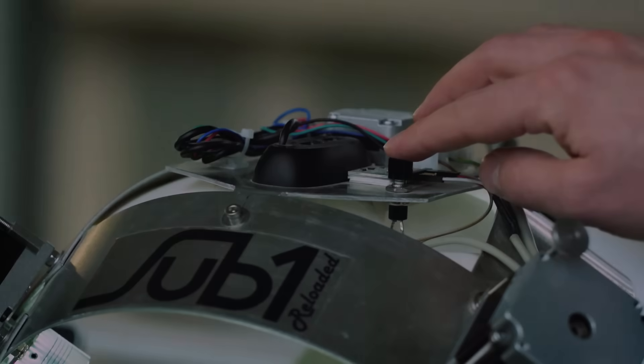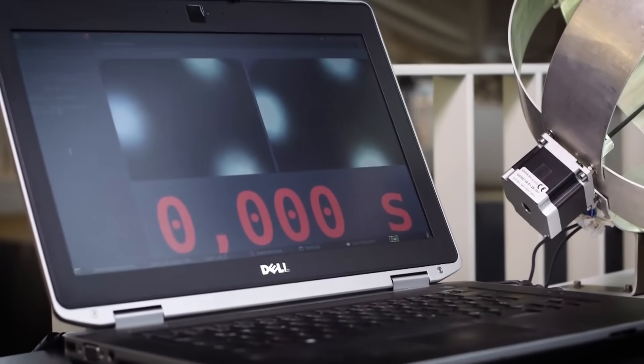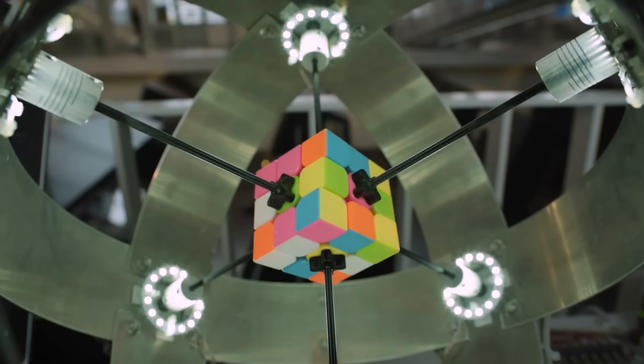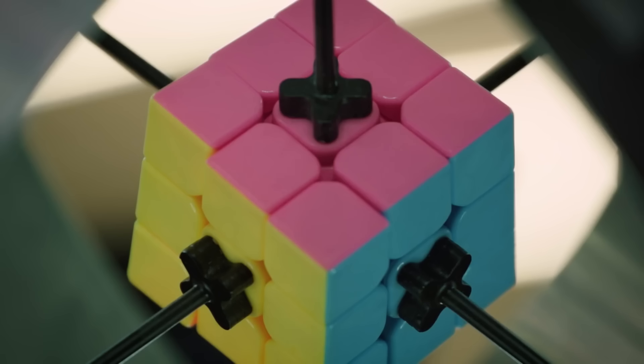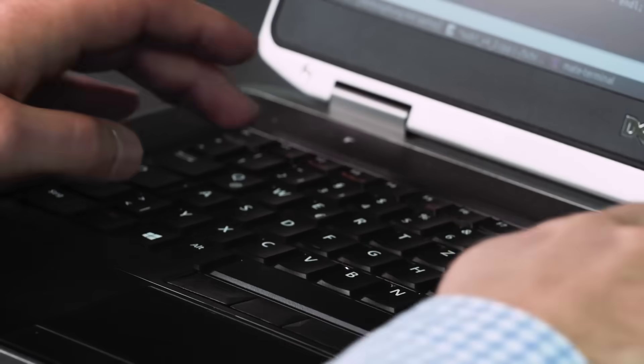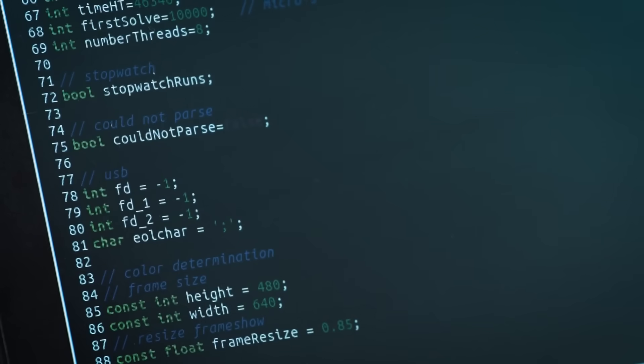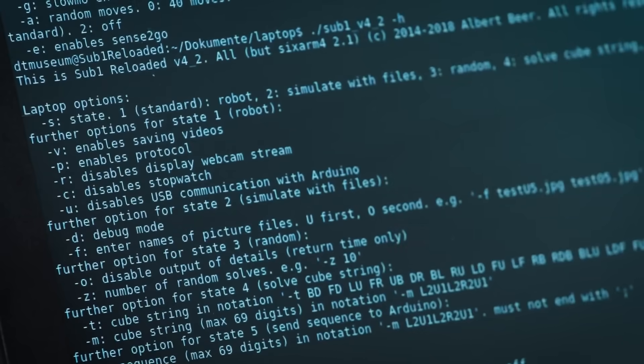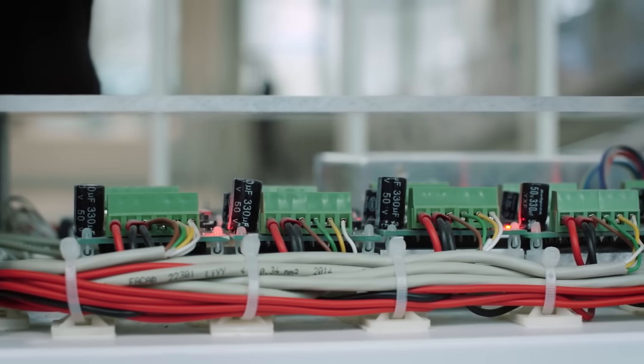While every Rubik's Cube can be solved with just 20 movements, Albert did not design the computer to use the fewest moves. Instead, he programmed it to achieve the best time, allowing the Sub-1 Reloaded to take extra moves to reach its goal. The computer received two pictures of the cube, identified the color of each piece, and calculated a solution with Tom Rakiki's extremely fast implementation of Kosiemba's two-phase algorithm.